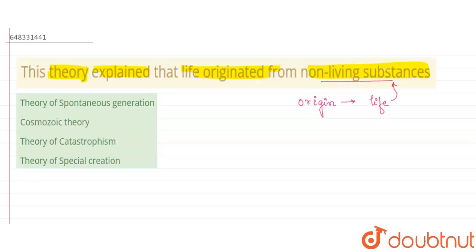If we see the options over here: theory of spontaneous generation, cosmozoic theory, theory of catastrophism, and lastly theory of special creation. So this theory of catastrophism is actually nothing but in this theory we find that the living organisms were formed on our planet by the supernatural power.